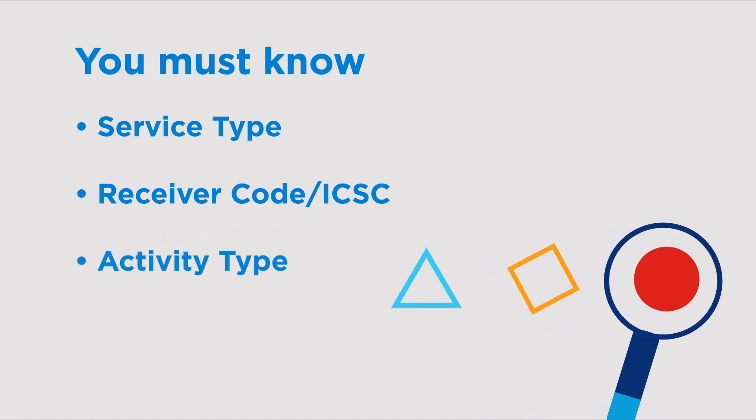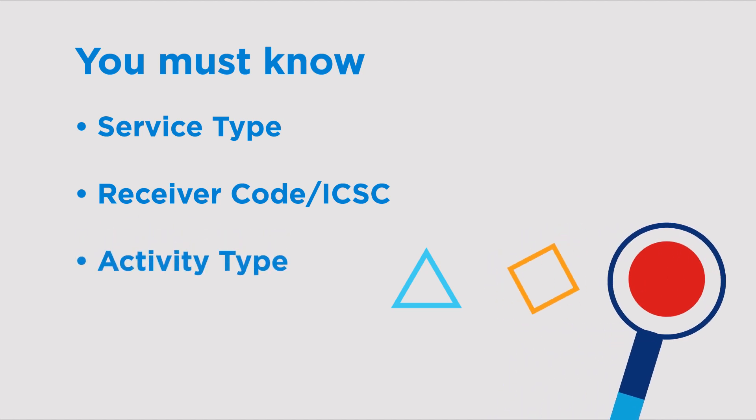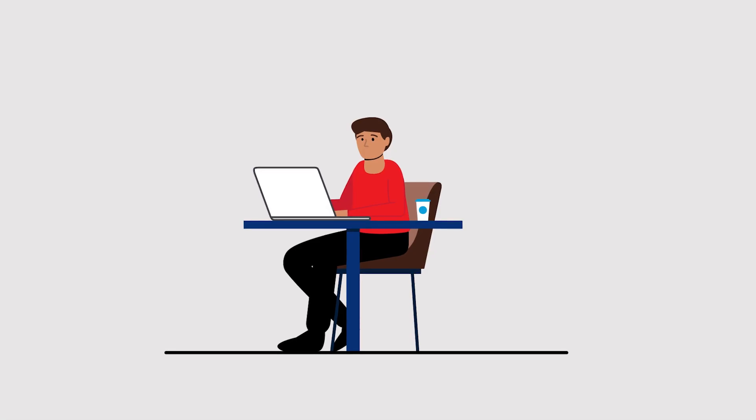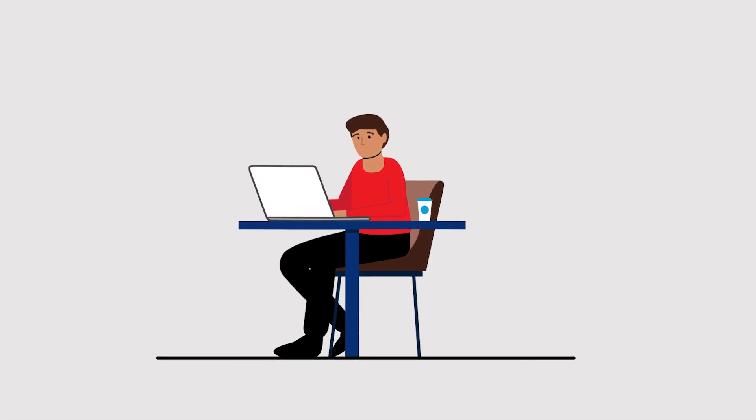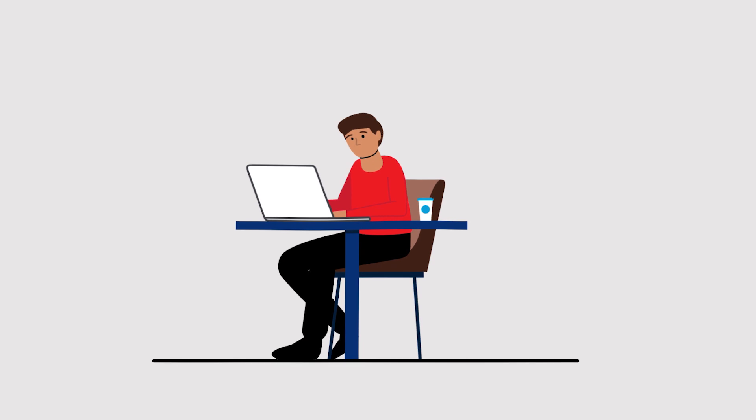Last up is activity type. This is an easy one. Use activity D for disconnect. Once your order is initiated, simply fill in the EASE fields.